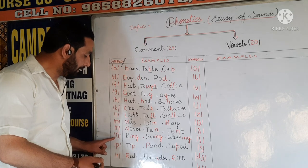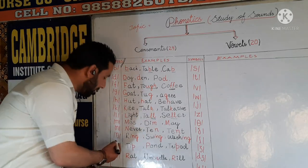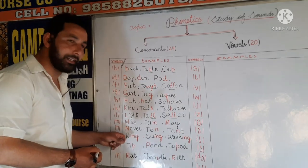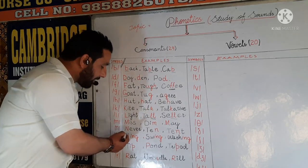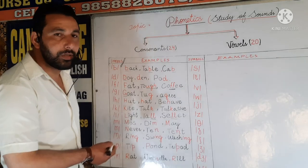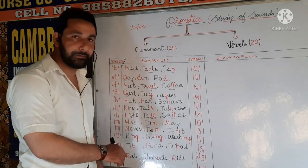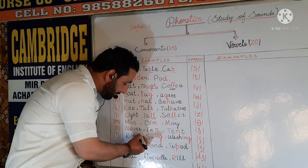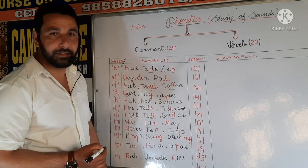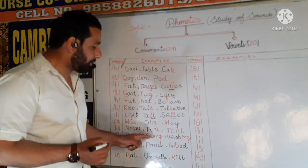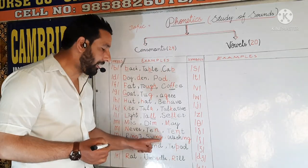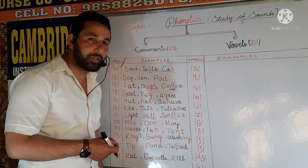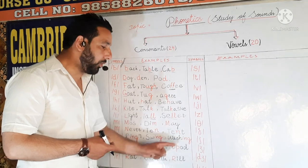Next is the NG sound. It looks like N but has an extra portion — this is NG. For example, 'ring' — if we cut R here, the remaining portion sounds NG. If we write the phonetic symbols of 'ring', we can write R followed by this NG symbol. Next is 'swing' — we again produce the sound NG. Next is 'washing' — wash + ING.